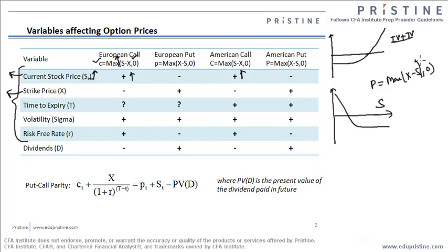If the stock price increases, which is after the negative sign, the value of the put will decrease. So there is a negative relationship — as the stock price increases, the value of the put will decrease. The same holds true for American put. If you have understood this part, it's very easy to understand the relationship of the strike price because it's exactly the reverse.